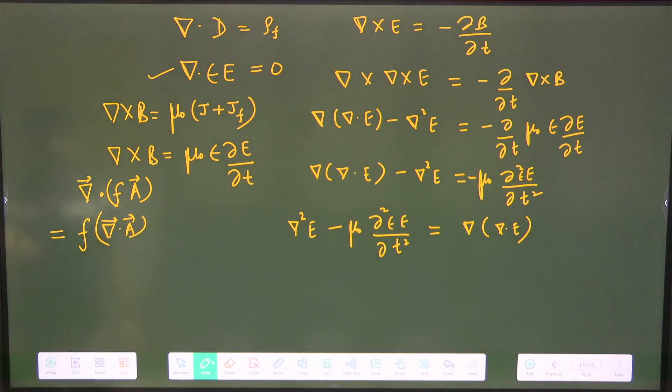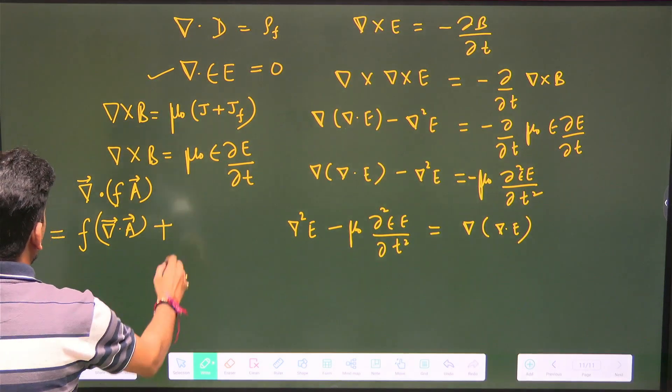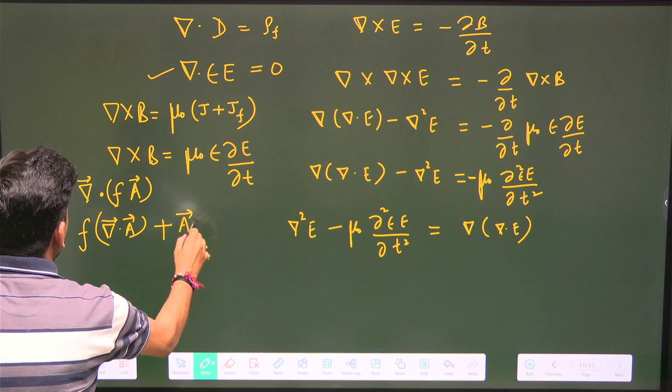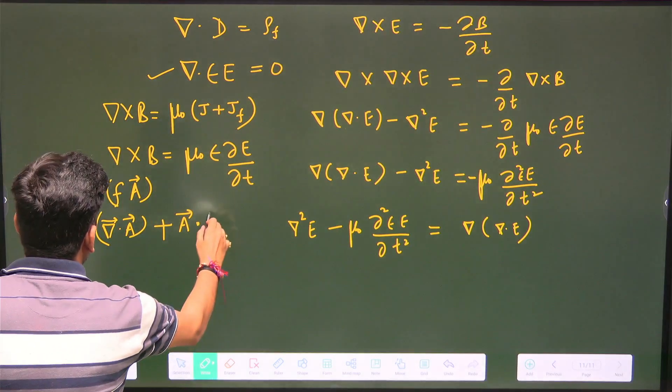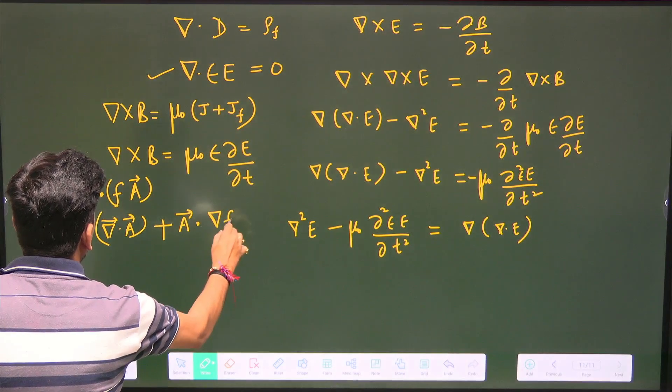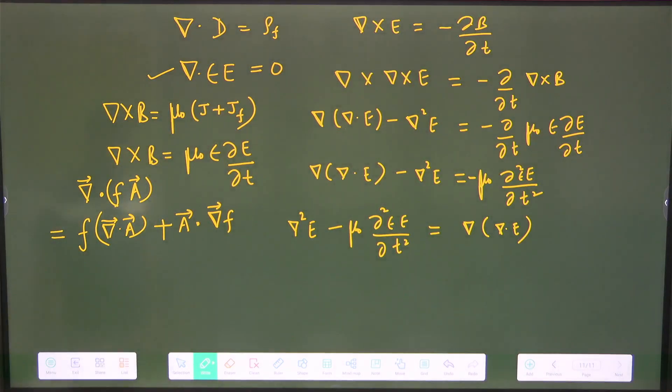Ultimately this quantity has to be scalar because this is like a vector multiplied by a scalar and you take divergence. Finally, dot product will be a scalar quantity. Plus it will be vector dot gradient of f, which again will be a scalar.